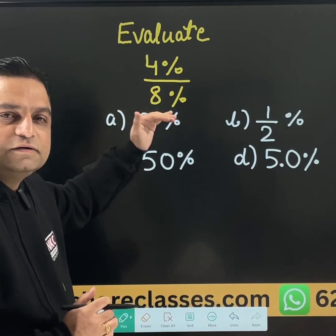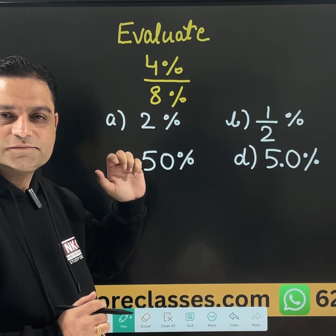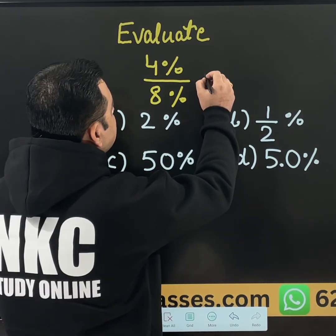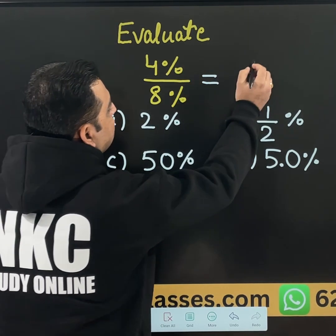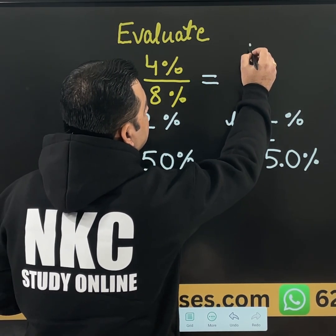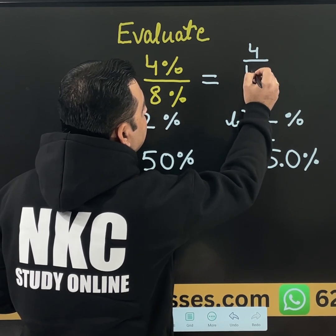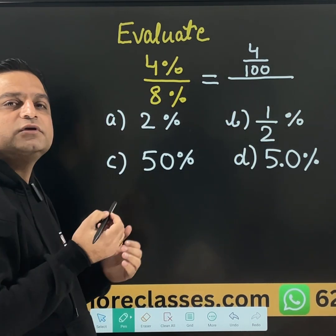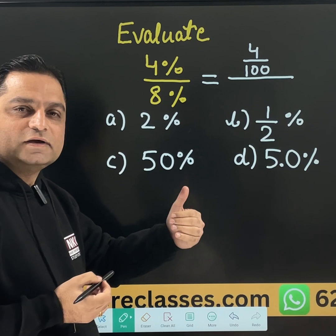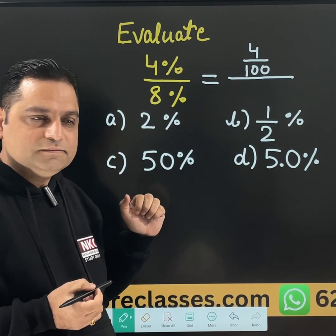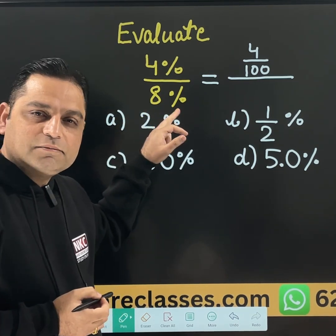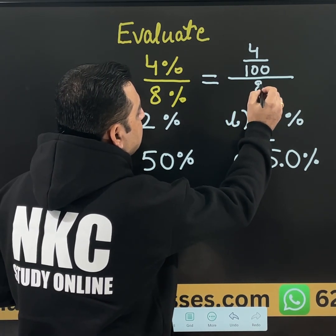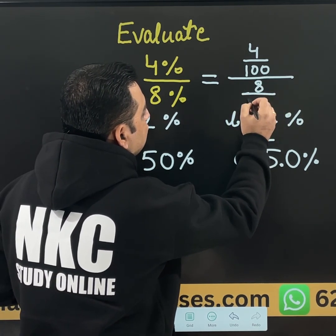4% divided by 8%. First of all, let me make you clear. 4% means 4 divided by 100, because we know that when we remove the percent sign, 100 comes in the denominator. Same way 8% is there — that means it becomes 8 over 100.